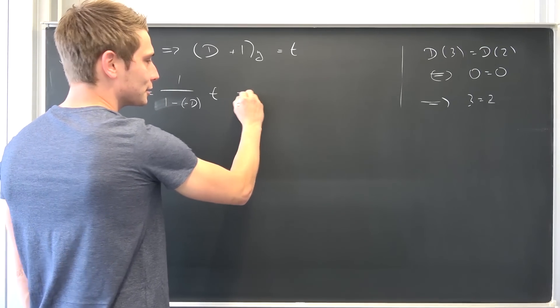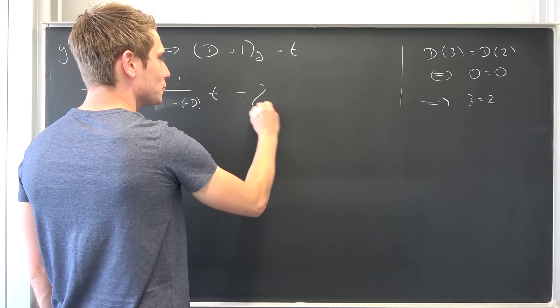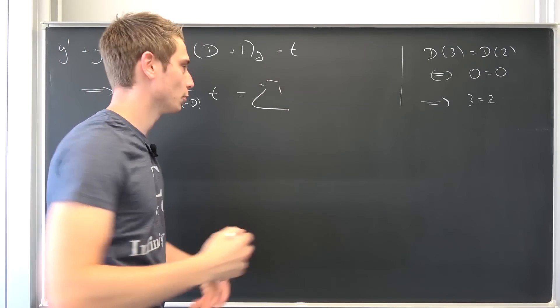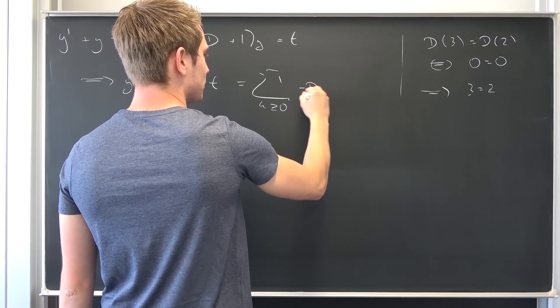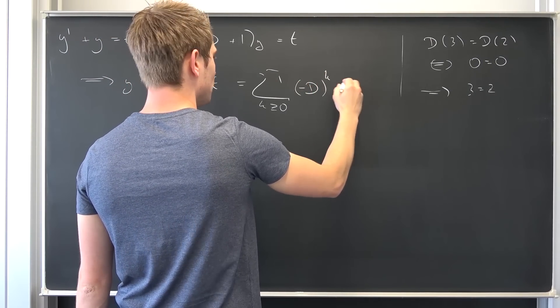Well, this is our good old boy, the geometric series. Okay, that's a good old infinity boy. So k being greater or equal to 0 and thus we have (-D) to the kth power times t.